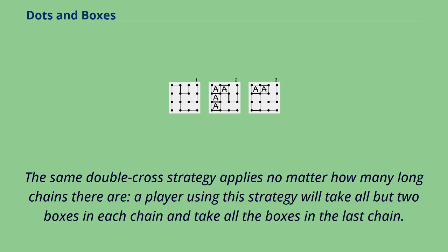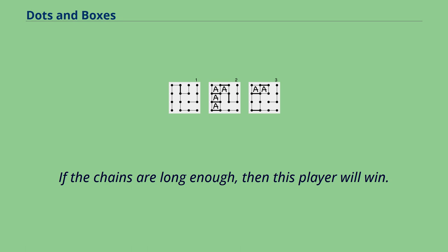The same double-cross strategy applies no matter how many long chains there are. A player using this strategy will take all but two boxes in each chain and take all the boxes in the last chain. If the chains are long enough, then this player will win.